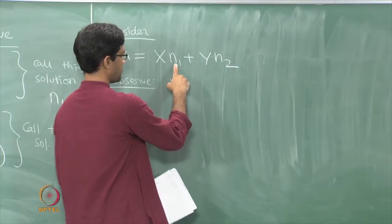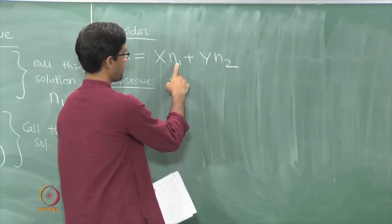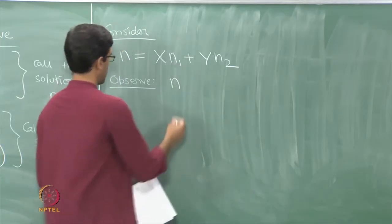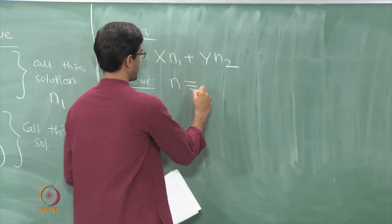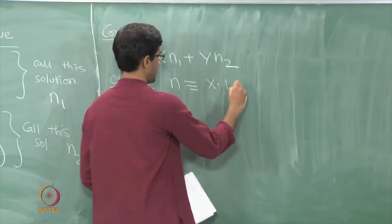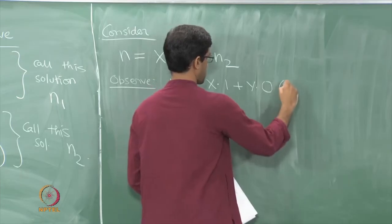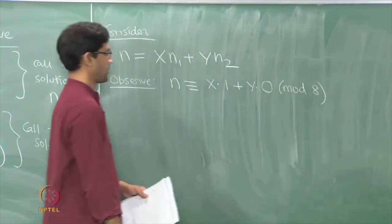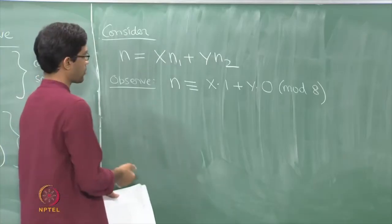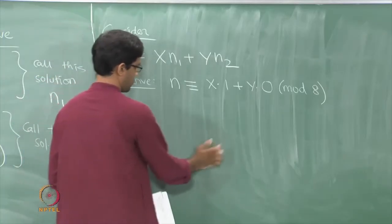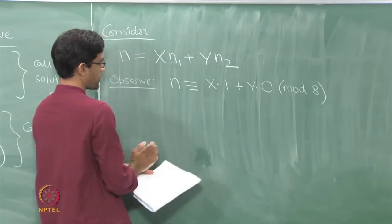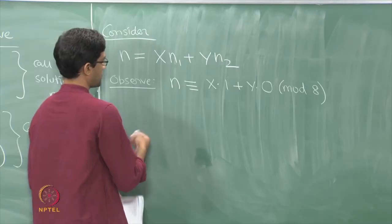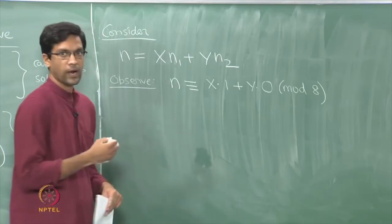Observe: n1 and n2 — what are they congruent to mod 8? n1 is congruent to 1 mod 8 by construction, and n2 is congruent to 0 mod 8. So n will turn out to be congruent to x times 1 plus y times 0 mod 8. This follows from the properties of congruences — congruences have nice properties with respect to addition and multiplication.